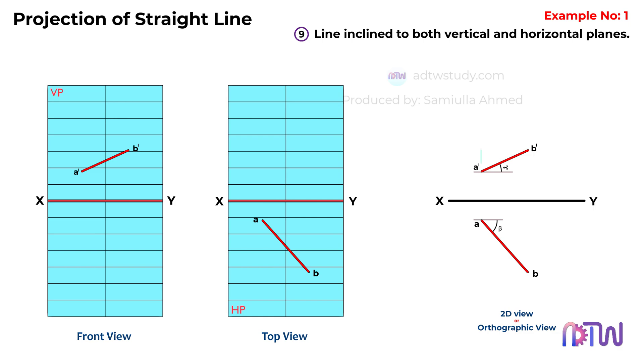Imagine a line that goes from a dash in the front view to a in the top view. This line is what we call a projector. Similarly, there's another projector that goes from b dash to b. These projectors are key to understanding how the line is positioned in space. Keep this in mind as we move forward.